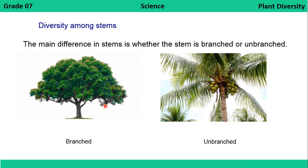Next is the stem. The main difference in stems is whether the stem is branched or unbranched. A tree with a branched stem and the coconut tree with an unbranched stem are good examples of these two types.